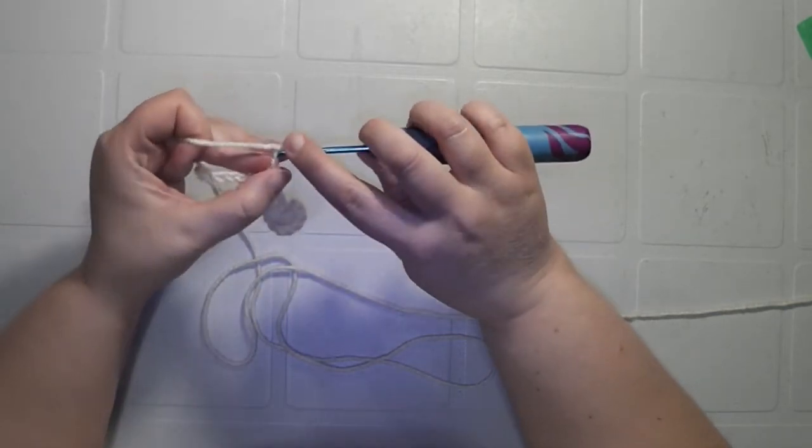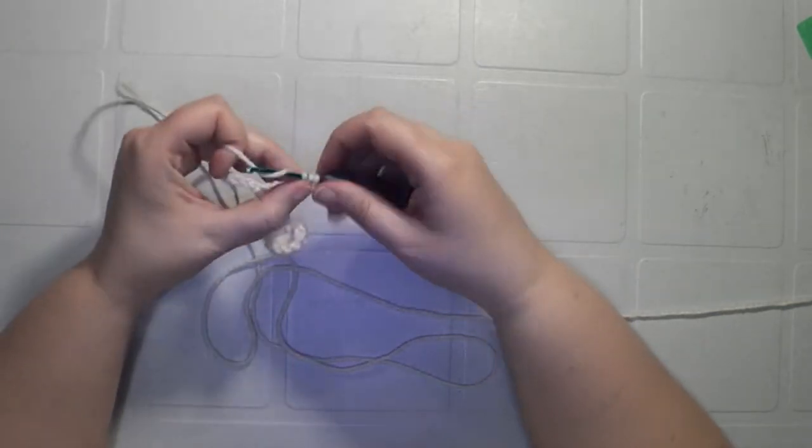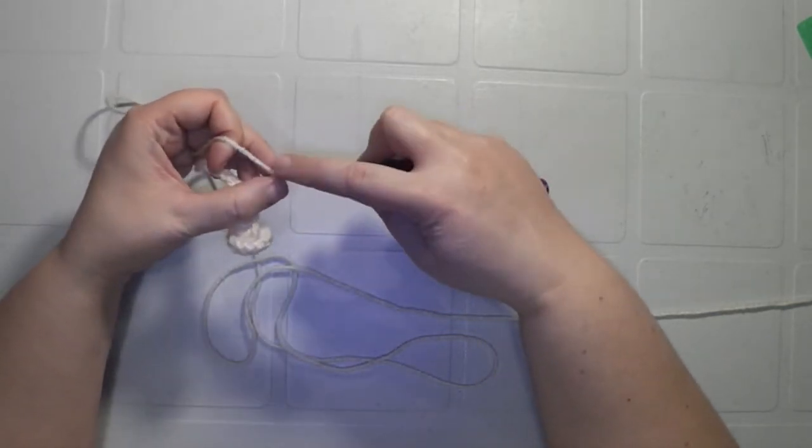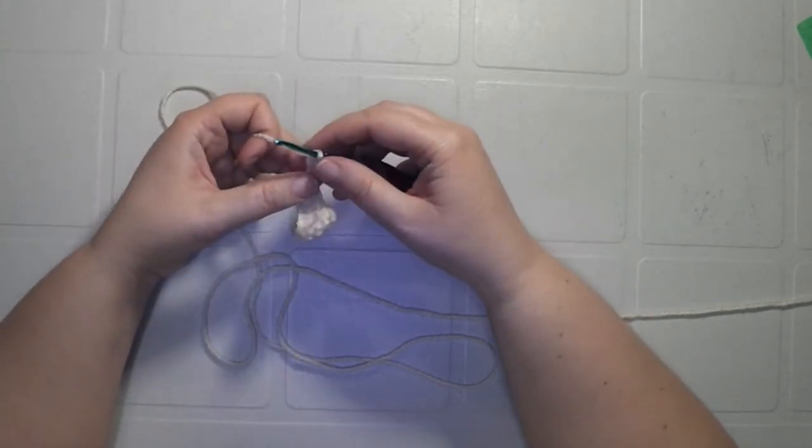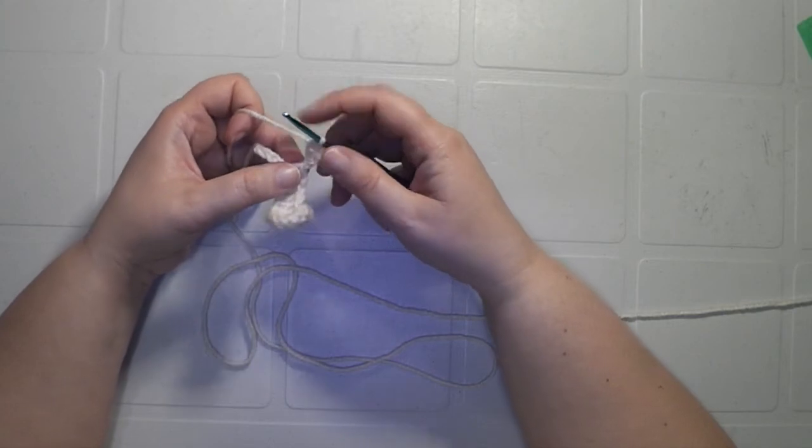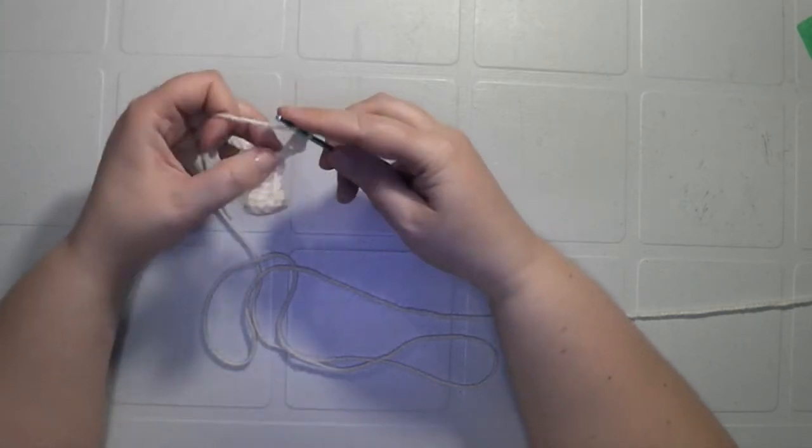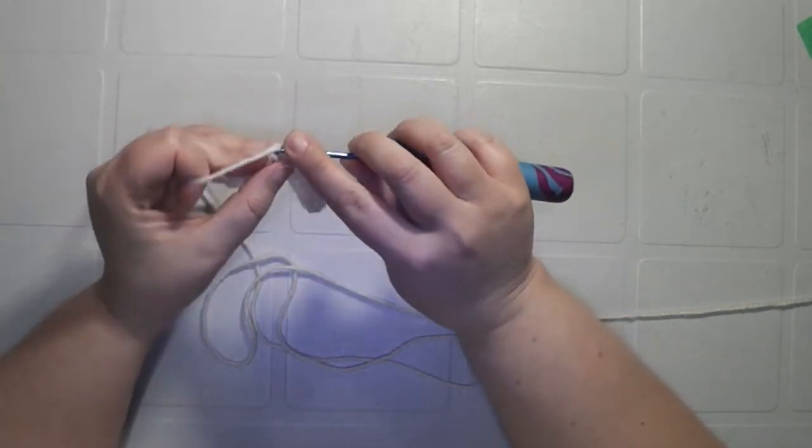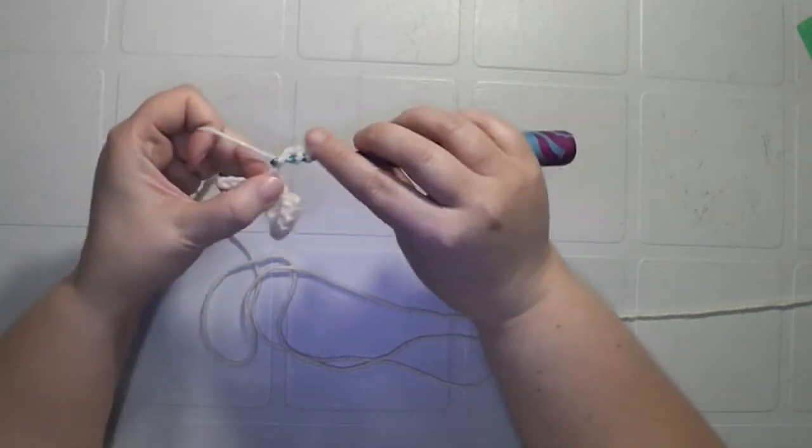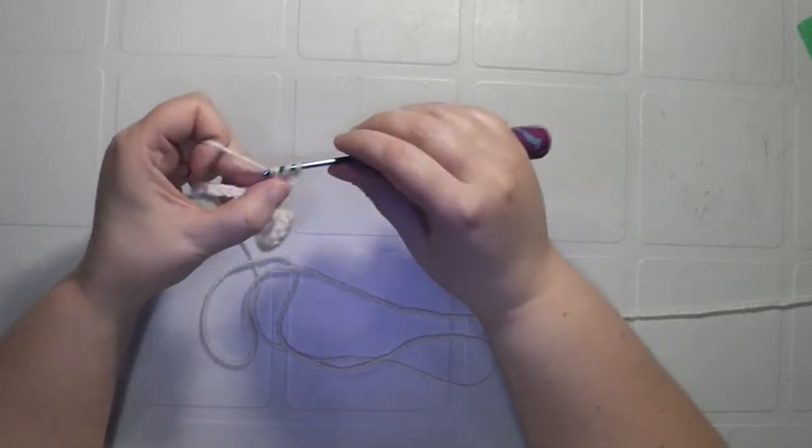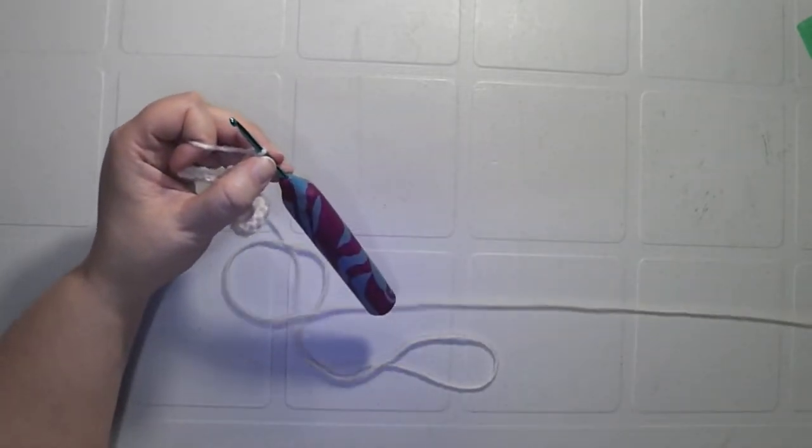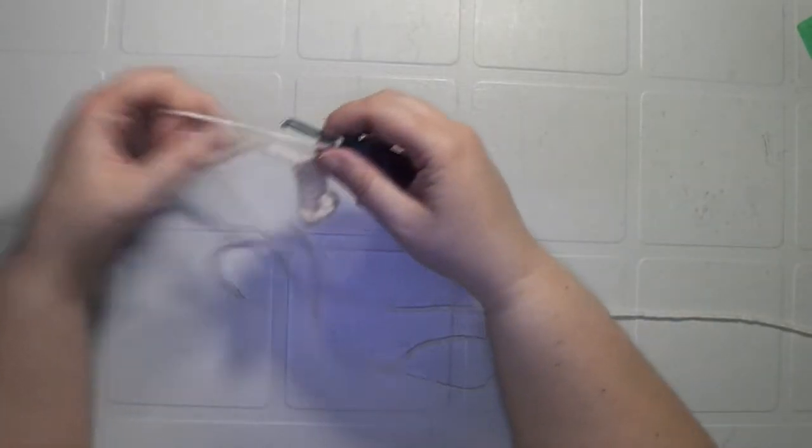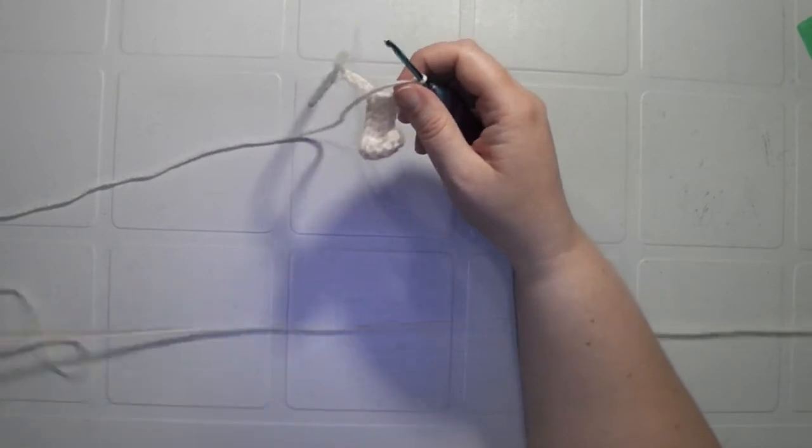Okay, if I can find it there, there we are. So double crochet into that stitch. And then this first chain that you made here, you want to do a double crochet into that one as well.